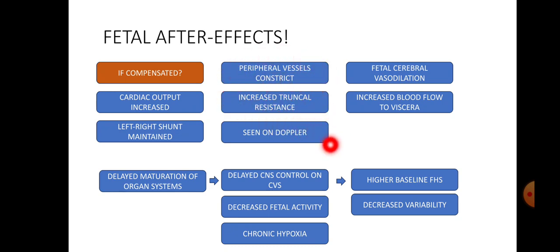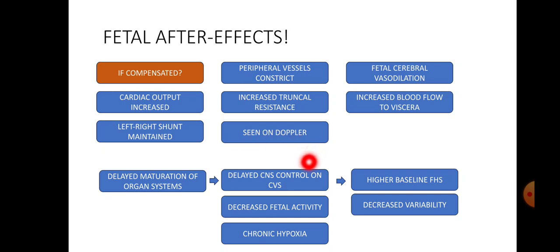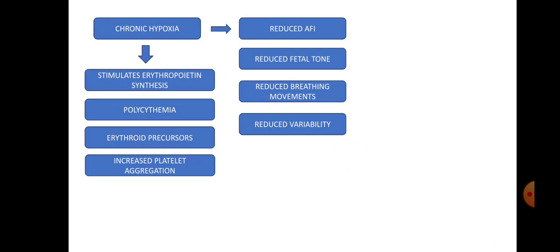Peripheral vasoconstriction and increased truncal resistance on Doppler are seen as increased resistance in peripheral arteries — for example, increased PI in the umbilical artery is an important early Doppler finding. As hypoxia, hypoxemia, and acidemia persist, organ system maturation is delayed, and CNS control over the fetus is affected. The baseline FHR, short-term and long-term variability are affected, with decreased fetal activity. With chronic hypoxia, baseline FHR rises and variability decreases on NST.